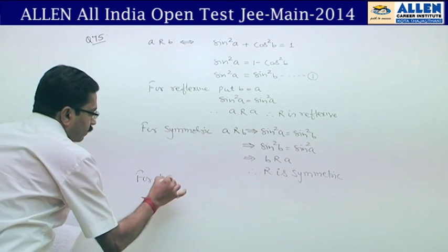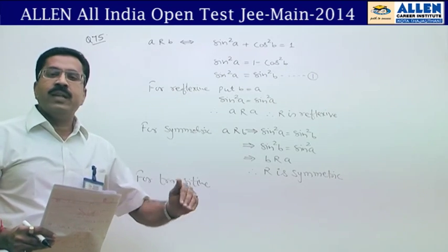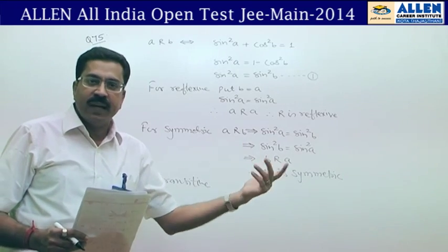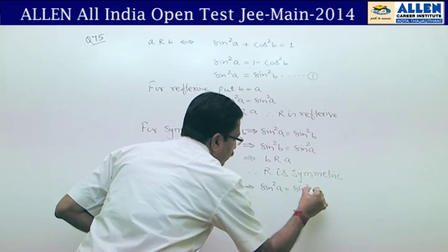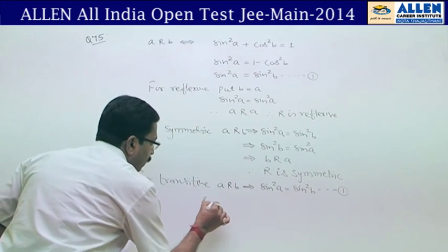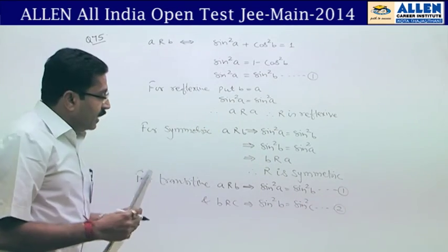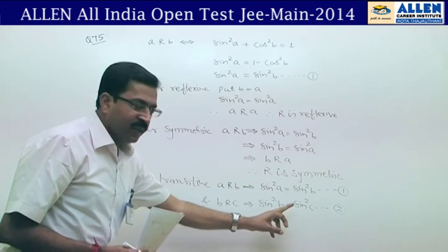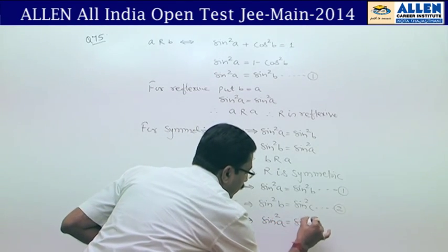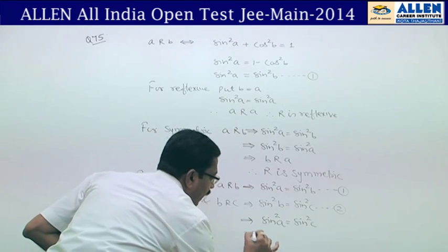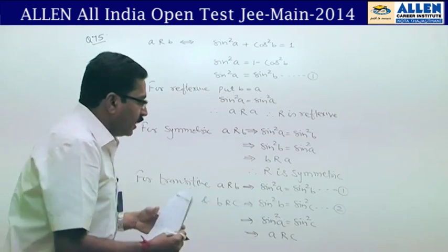Next, for transitive: we take a related to b and b related to c, then prove a is related to c. A related to b implies sin²a = sin²b (equation 1). B related to c implies sin²b = sin²c. Combining both equations, sin²a = sin²c, which means a is related to c.